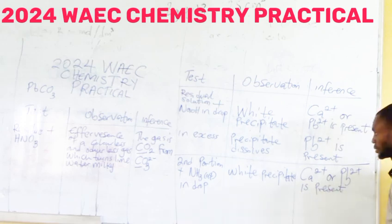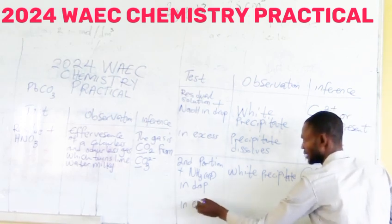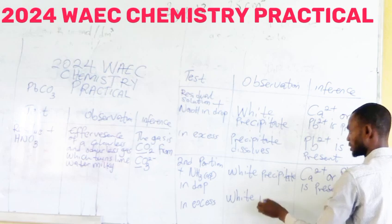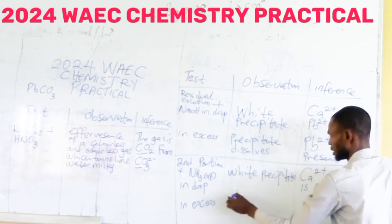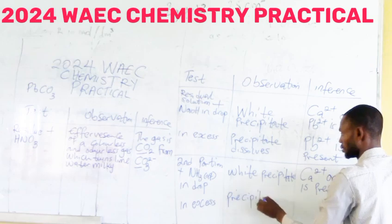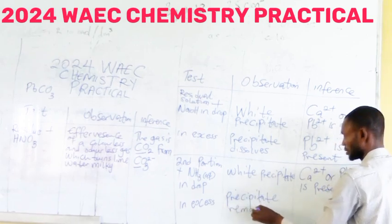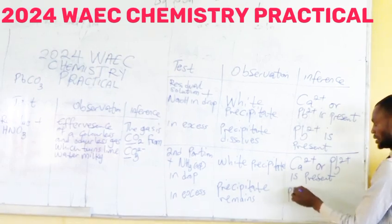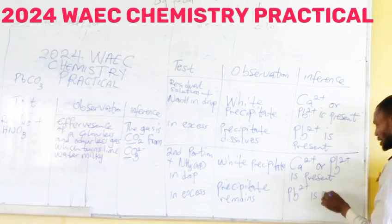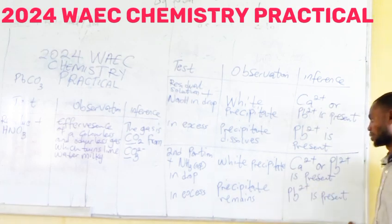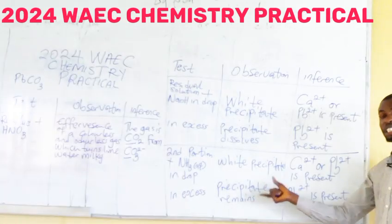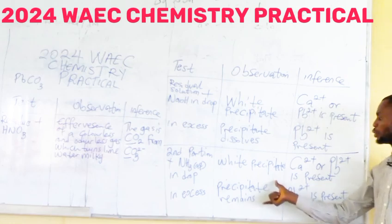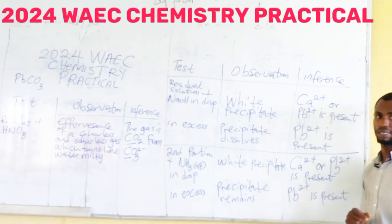In excess, the white precipitate remains — or you can say precipitate insoluble. If the precipitate remains in excess, definitely Pb²⁺ is present, because it is the only one that gives an ordinary precipitate. Aluminium is insoluble in aqueous ammonia and will form a white gelatinous precipitate. In the next episode we are going to see the practical test for all these experiments.